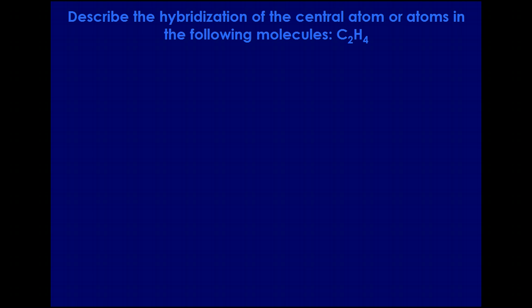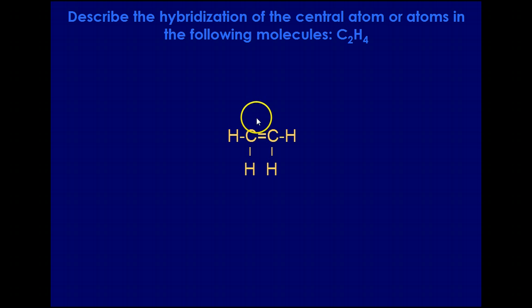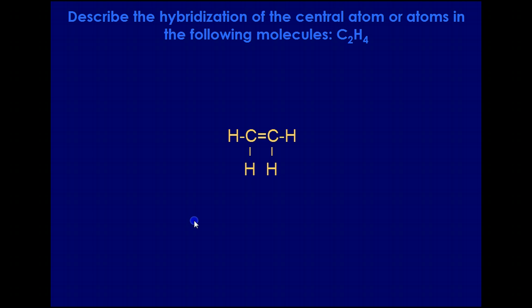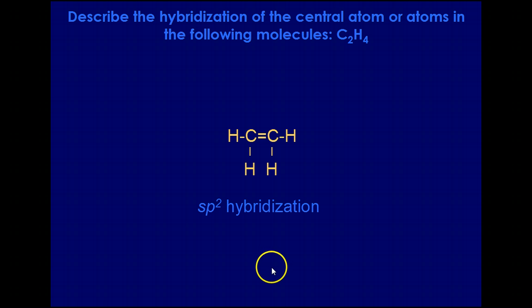We have C2H4. When we draw this one out, we have a double bond between the two carbon atoms. Looking at the hybridization, carbon has three areas of electrons surrounding that central atom. So there need to be three hybridized orbitals — that gives us sp2. That double bond's other pair of electrons would just be in an unhybridized p orbital.